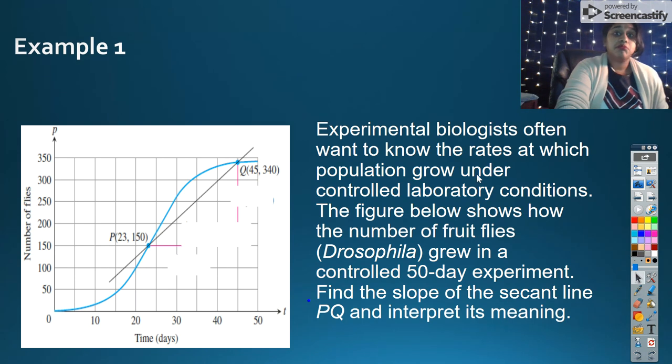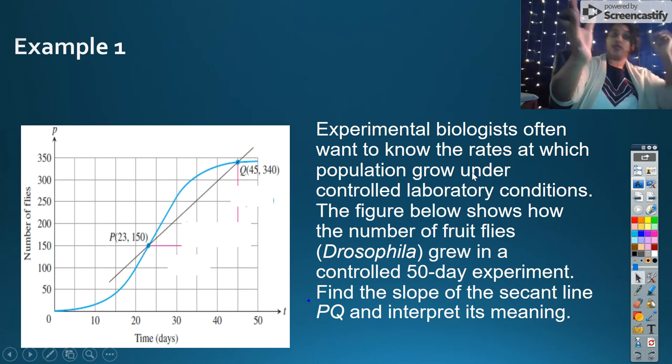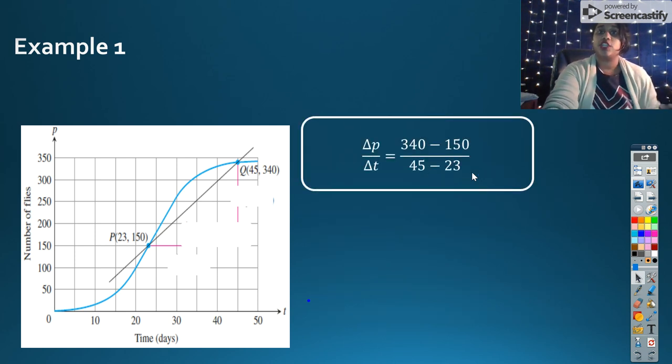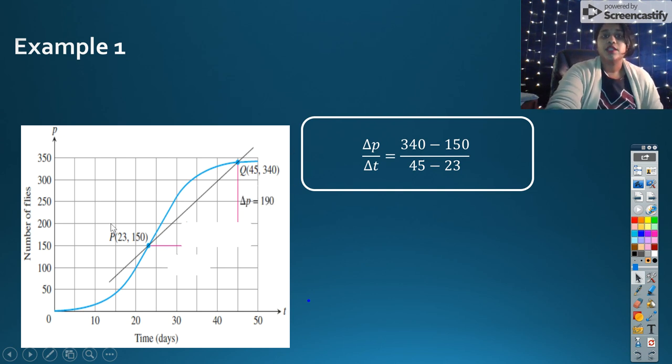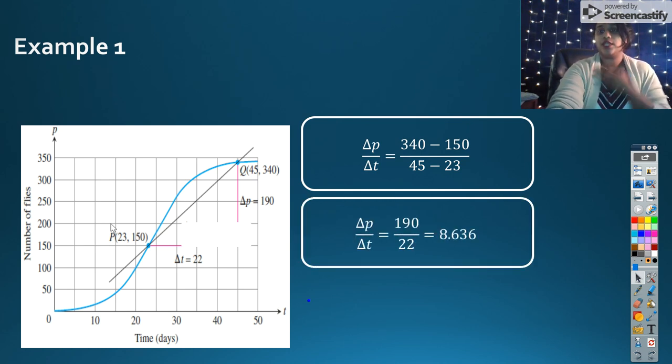Here's the slope of that secant line, that point between P and Q hitting two points. So I can see this as change in P over change in T. Where did I get those values? It's right here from my coordinate point. So change in P is 190. Change in T is over 22. So I can plug that in and we get approximately 8.636.